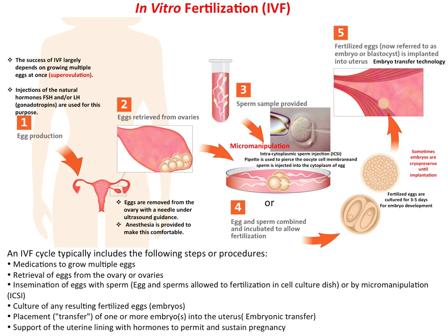Now coming into the science — what is IVF? Here you can see the various steps of in vitro fertilization. The first step is egg production: eggs are over-produced in the woman. The success of IVF largely depends on growing multiple eggs at once, which is called super ovulation. This super ovulation is induced by natural hormones like FSH and LH, called gonadotropin hormones.